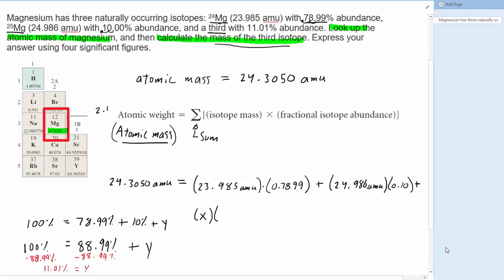When we move that decimal place over two places to the left, we will end up with 0.1101.